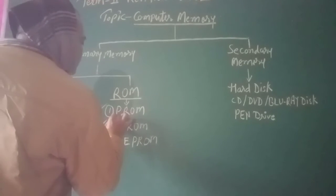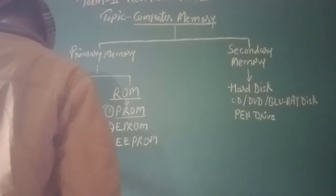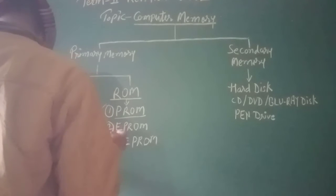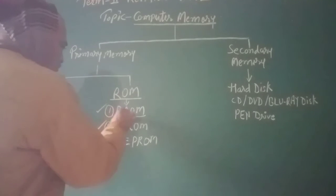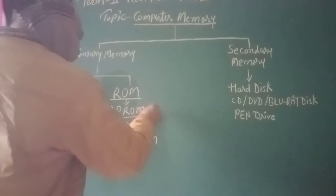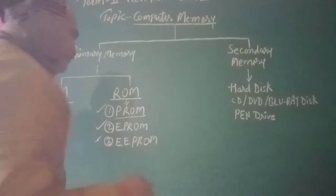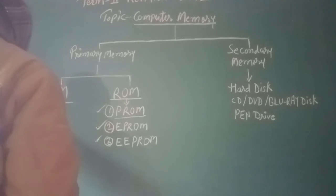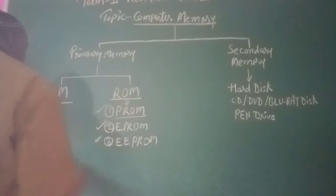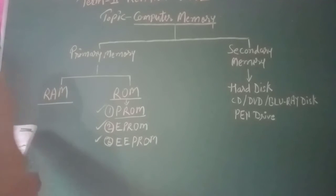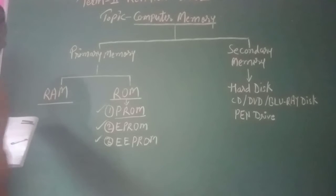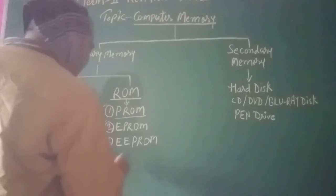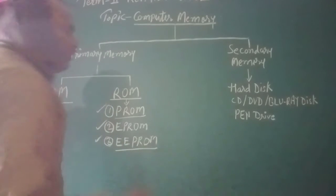The first type is PROM — Programmable Read-Only Memory. The content of PROM can be modified by a programmer only once; the programmer can change the data only once, not more than that. The second is EPROM — Erasable Programmable Read-Only Memory — on which data can be erased and rewritten. The third is EEPROM — Electrically Erasable Programmable Read-Only Memory — on which data can be erased or rewritten using an electrical charge, allowing us to refresh the read-only memory.